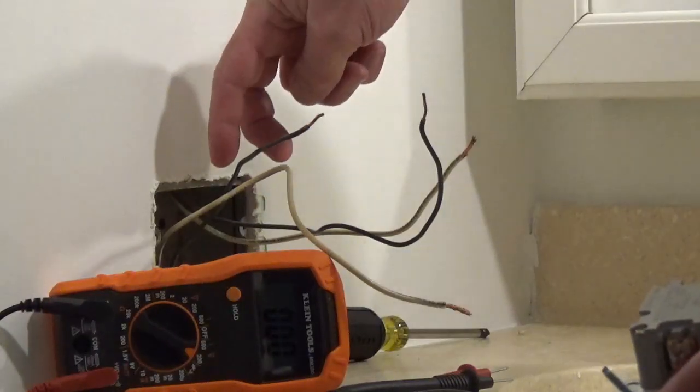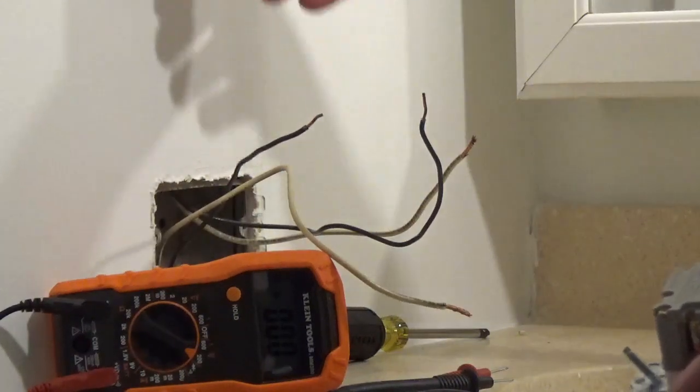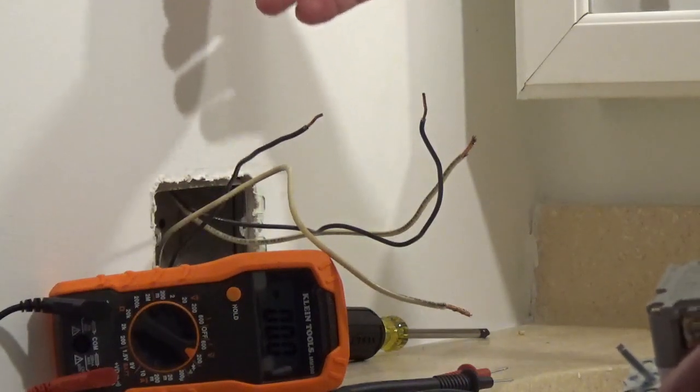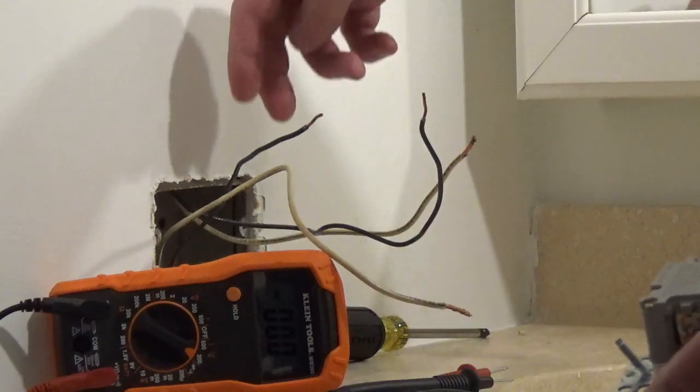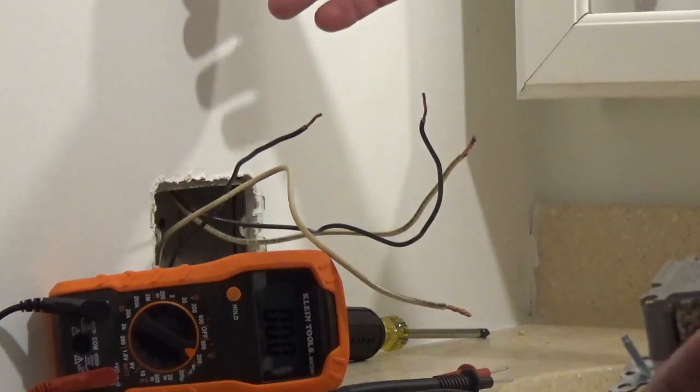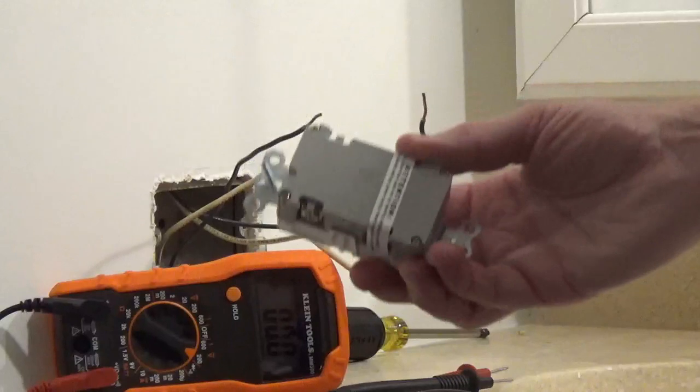In your electrical box, if you only have two wires plus a ground wire, a bare ground or a green wire, or if you have two wires and no ground wire, you're only going to be using the line side.